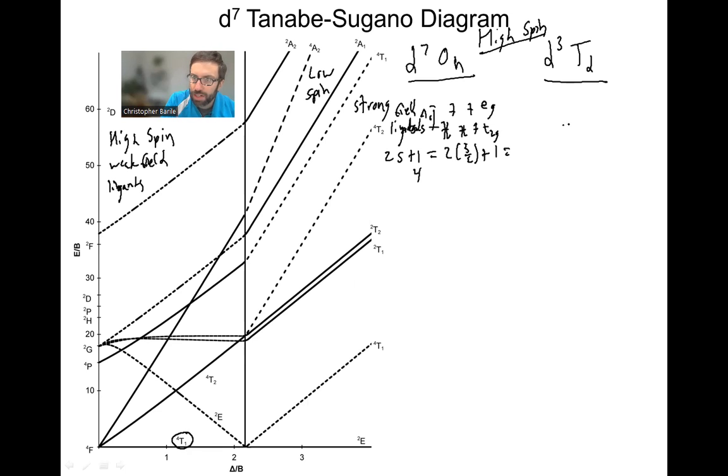Similar thing when we do the tetrahedral side of things. Now we have what we call delta T, and we have our E's on the bottom and our T2's. It's sort of flipped. We drop the G's because there's no inversion operation in tetrahedral. Remember G is part of the Mulliken symbol. That means you're symmetric with respect to inversion operation. So if we don't have inversion in tetrahedral, then we don't have G's or U's in the Mulliken symbol. So we get rid of those. And we have D3 high spin. So we're going to do one, two, and we're high spin. So we don't pair. Again, we have three unpaired electrons. So we're going to have three halves. So two times three halves plus one. Again, we're going to get a quartet. So the same ground state applies. It's part of the reason why this diagram works for both of these two cases.